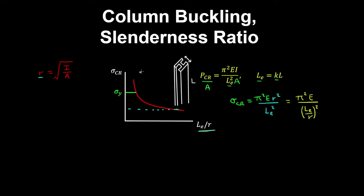And at the other end, you have a short stocky column that may look something like this. So this length is quite short compared to the cross section. In this case, the column would likely yield before it buckles. So this is your critical buckling stress for the column.